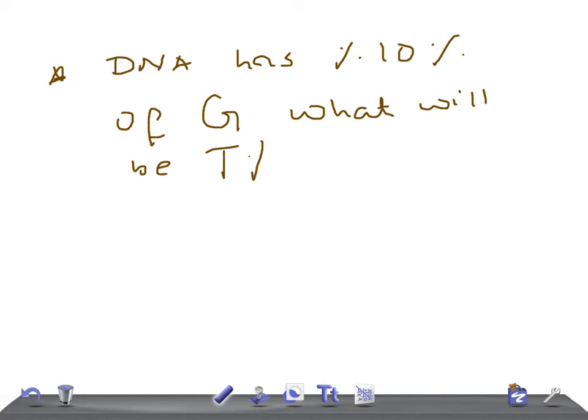So, as we know, percentage of G equals percentage of C. Right? Excellent. What is G? G is guanine, C is cytosine, A is adenine, U is uracil, T is thymine.